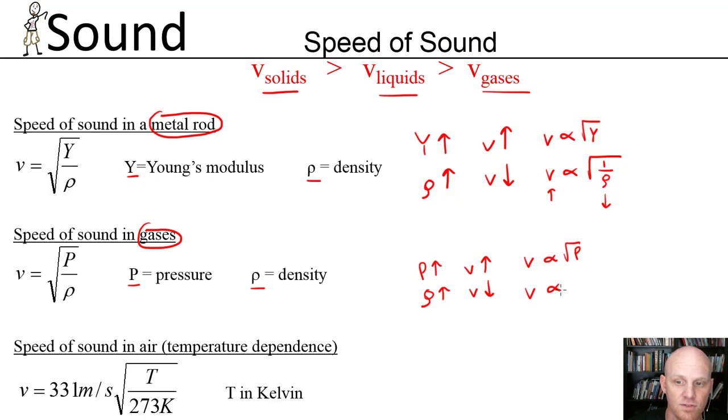Velocity is proportional to the square root of one over density. So if you wanted a two-fold increase in your speed of sound, you would have to have a density of your new gas that's four times smaller.